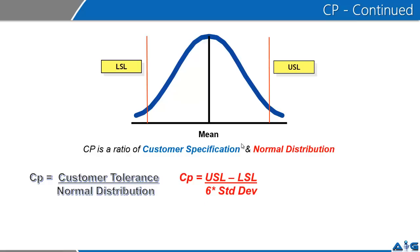While you are looking at calculating CP, you must have information on your upper specification limit, your lower specification limit, and your standard deviation.